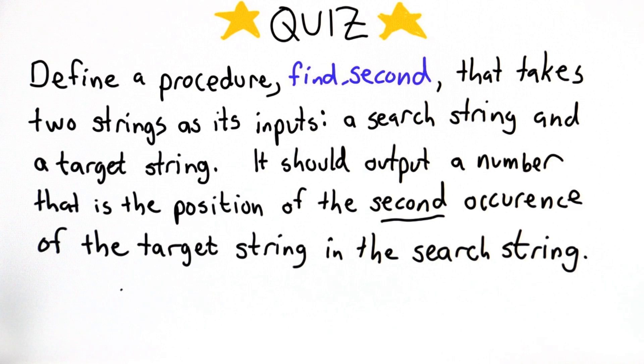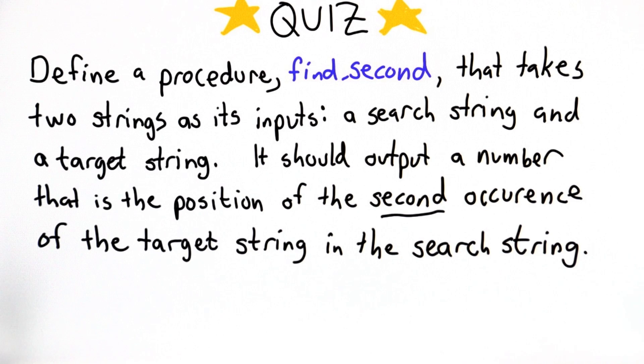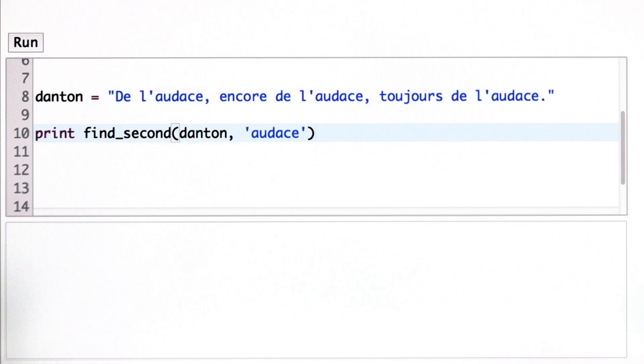So I'll show you an example in the Python interpreter of what findSecond should do, and then you should try to solve this on your own. So for an example,